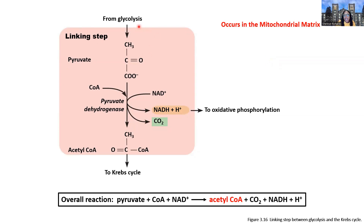The linking step is where we take the products from glycolysis, which is pyruvate. Glycolysis produced two pyruvate per molecule of glucose, and we shuttle this pyruvate into the mitochondria, across into the matrix. With the help of pyruvate dehydrogenase, we input CoA — a coenzyme — and the end result is acetyl-CoA.